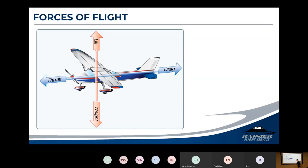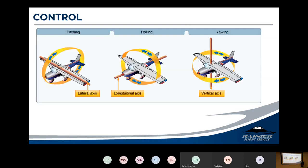Once we get our plane flying, we have to move it around. An aircraft moves on three basic rotations in three dimensions. The first is pitch — nose up, nose down. We control that with the elevators. The pilot pushes the control yoke back and forth to control pitch through the elevator on the back of the airplane. Pitch rotates about the lateral axis — the bar going from wingtip to wingtip.